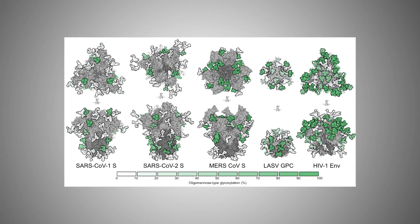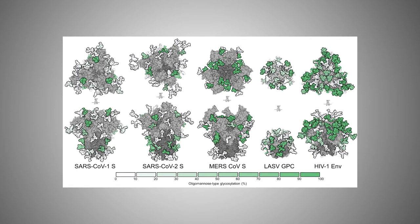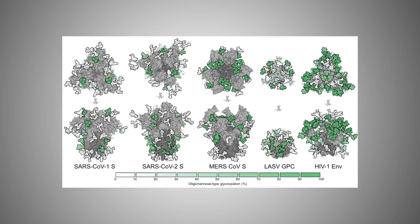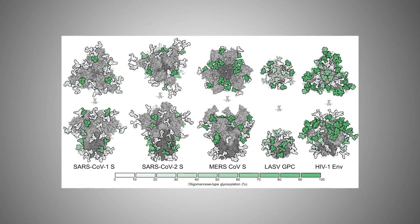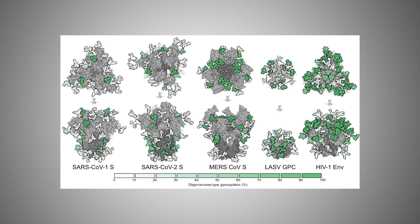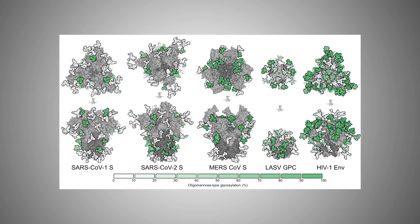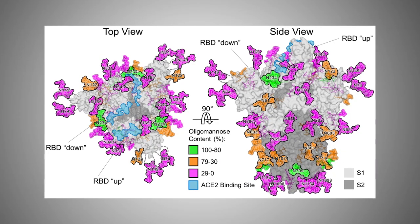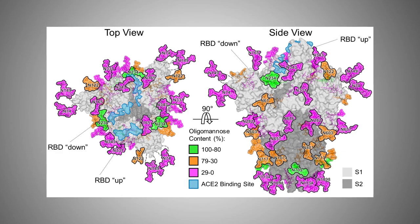Glycans can cover and shield the viral proteins from the host immune response, but they can do this to varying degrees. Some viruses such as HIV shield themselves very heavily, while others such as the coronaviruses don't do it to as much of an extent — and this is an encouraging feature of the virus since it's more susceptible to the immune response. So we characterize the sugars and how they're processed on the surface of the spike proteins.